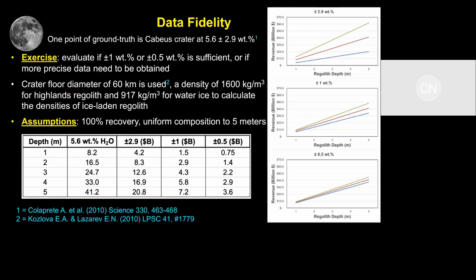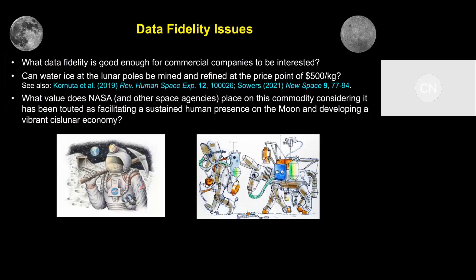The diagrams on the right show the 5.6 weight percent red line, and you can see the high and low estimates based upon revenue at $500 per kilogram of water ice. The deltas are shown in the table — you can see what it is for 5.6 in the second column, and then the different uncertainties, with those deltas getting smaller as you go to smaller uncertainties. I don't know if plus or minus 0.5 weight percent is enough to develop those business models. But what we do need is a price per unit mass — a market for these products to be purchased.